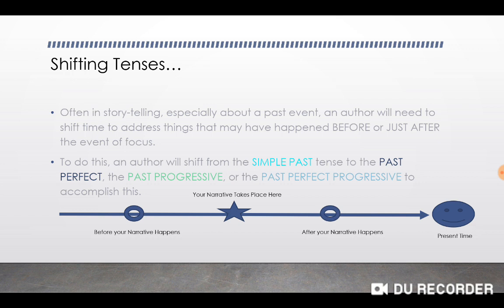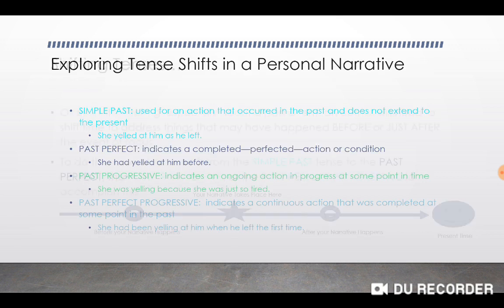This is where you'll probably want to be looking at your tense aspect chart, because it goes over the four tenses. There's the simple past, the past perfect, the past progressive, and the past perfect progressive. The simple past is simply used for an action that occurred in the past and does not extend to the present — it's all done, it already happened and it's finished. For example: 'She yelled at him as he left.' This already happened, it's over, so it's simple past. That is the tense you will probably be using most of the time.